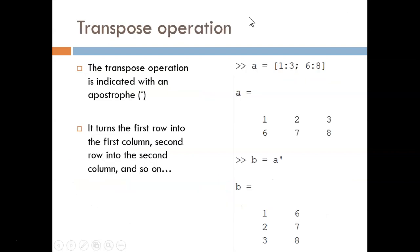Here we see more details on the transpose operation. To do this, we use an apostrophe or a single quote. This will turn the first row into the first column, the second row into the second column, and so on.